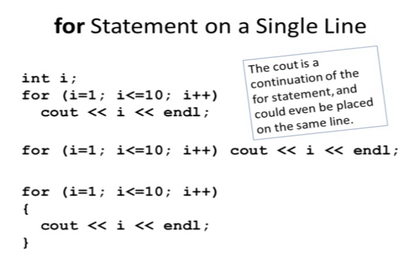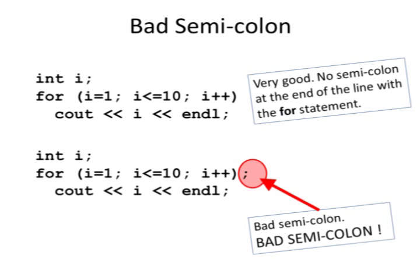In the case where you have a block of code attached to the FOR statement, then it's the block of code that ends the FOR statement. Now let's look at this one. Bad semicolon. Bad, bad semicolon. There's a semicolon at the end of the FOR statement on the second example.